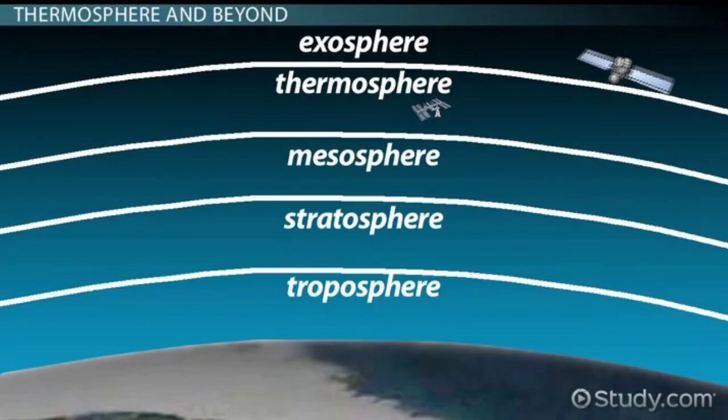The Earth's atmosphere can be identified as zones or layers arranged like spherical shells according to altitude above the Earth's surface. Different types of physical and chemical properties are found in different altitude zones in the atmosphere.